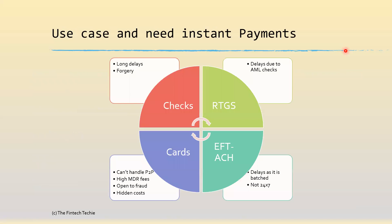We are familiar with these four broad payment categories: checks, RTGS, EFT/ACH, and credit or debit cards. Checks are now going into oblivion because of long delays and forgery which often happens with checks. RTGS, while it's an excellent payment mechanism, often has delays — it's not always instant, because it is always subjected to AML and money laundering checks, which cause delays. EFT/ACH transactions are batched or bunched together and delivered to the clearinghouse, so they are not instant and not always available 24/7.